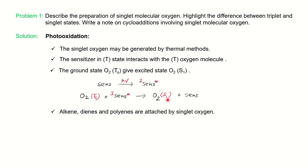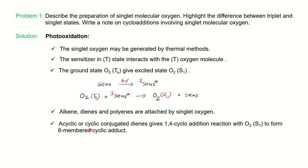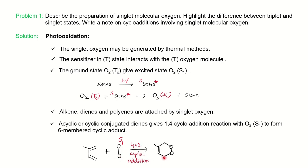Once oxygen is excited to the singlet state, it becomes more reactive and can react with alkenes, dienes, or polyenes. You will see a 1,4-cycloaddition of oxygen with the diene or polyene, forming a six-membered transition state. You can see a diene and a singlet oxygen molecule undergoing a 4+2 addition — a very famous Diels-Alder type reaction — showing the formation and addition of oxygen to the diene.